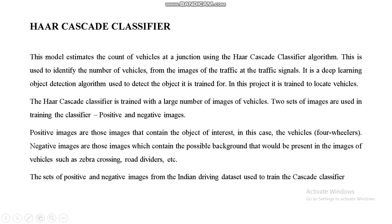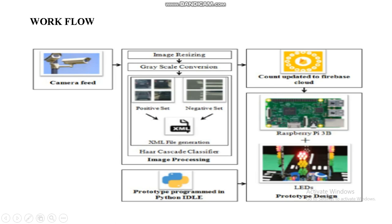We are using the Haar Cascade classifier. The workflow: the camera feeds the video, frames are captured and converted into grayscale, then converted into an XML file. Depending upon that file, we run our detection program to count the number of vehicles present in the video, and that count is uploaded to our IoT page.